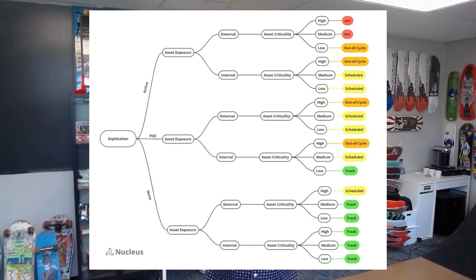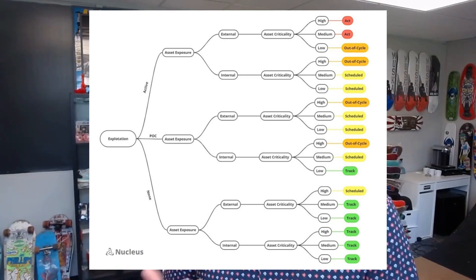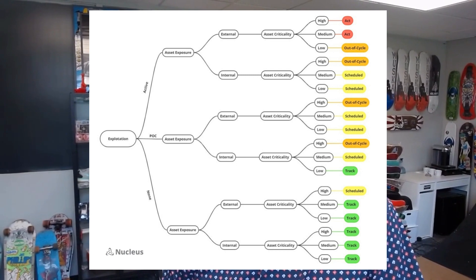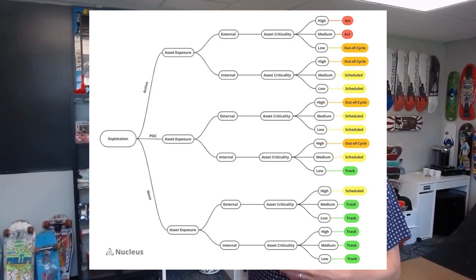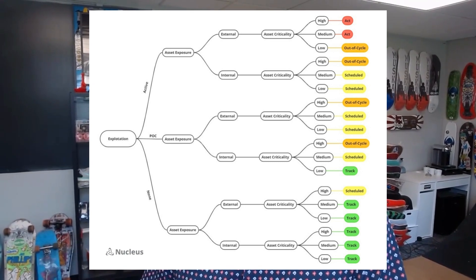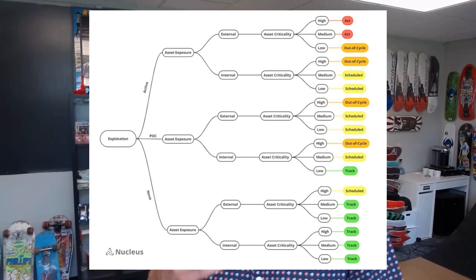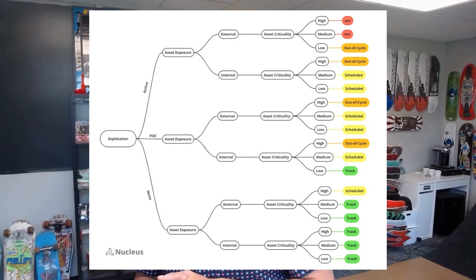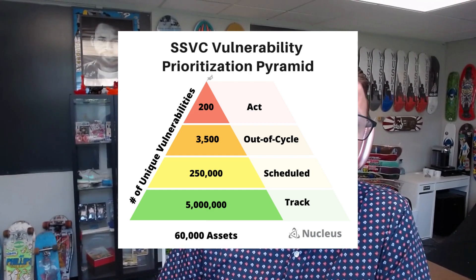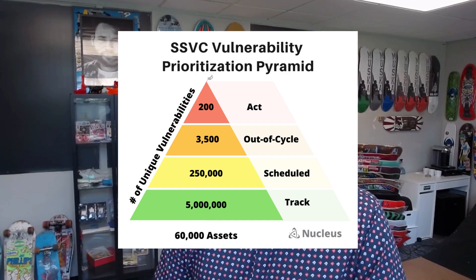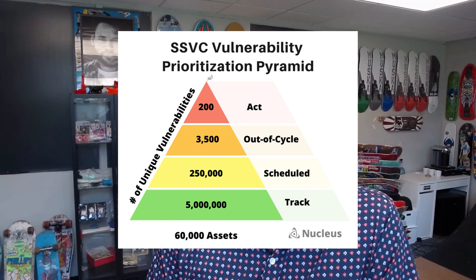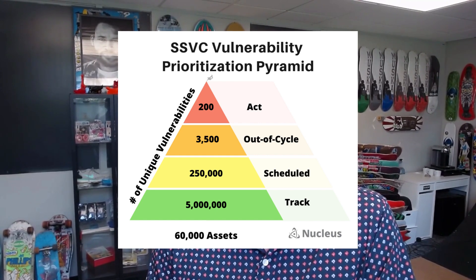You might have different decision trees for different stakeholders and use cases. To walk through a basic decision tree: first we start with exploitation — is it actively being exploited, is there a proof of concept, or none? Next we look at asset exposure, which could be based on something as simple as an IP address, whether it's external or internal. Then asset criticality: high, medium, or low. If you don't have asset context, that's okay — you can start with just exploitation based on threat intelligence. Once decision criteria are defined, organizations should measure the number of vulnerabilities mapping to each decision outcome, keeping outcomes reasonable to avoid overwhelming the remediation team.